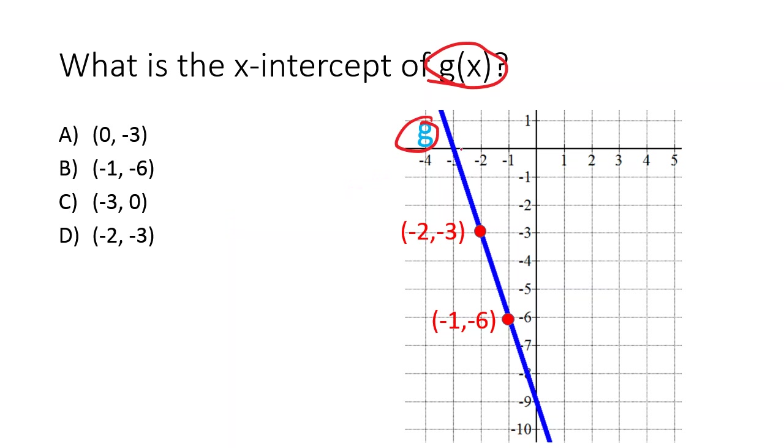If we trace the line, notice it hits the x-axis right here at negative 3. So our x-value is negative 3 and our y-value is 0. So it's the point negative 3, 0.